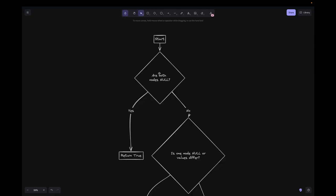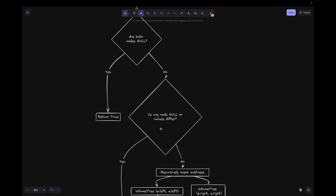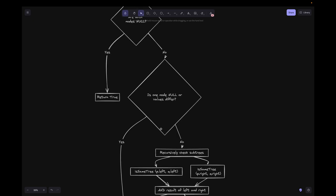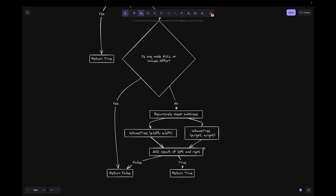Let's look into the flowchart here. First, we check if both nodes are null. If yes, return true. If no, continue and check if one node is null or values differ. If yes, return false. If no, then recursively check subtrees. We check the left subtree of both trees and the right subtree of both trees, then do the AND of the results to determine if we should return false or true.